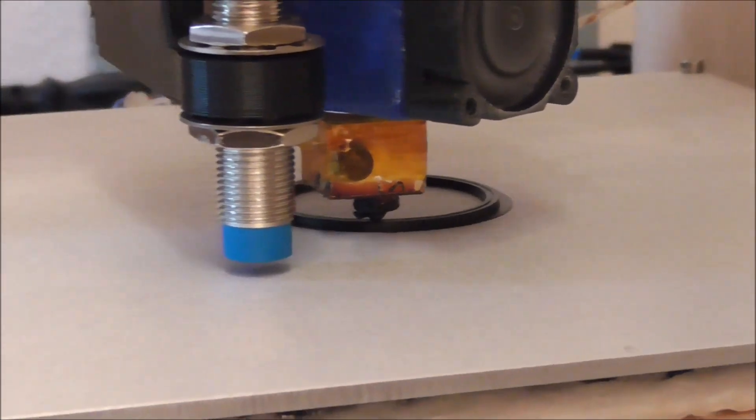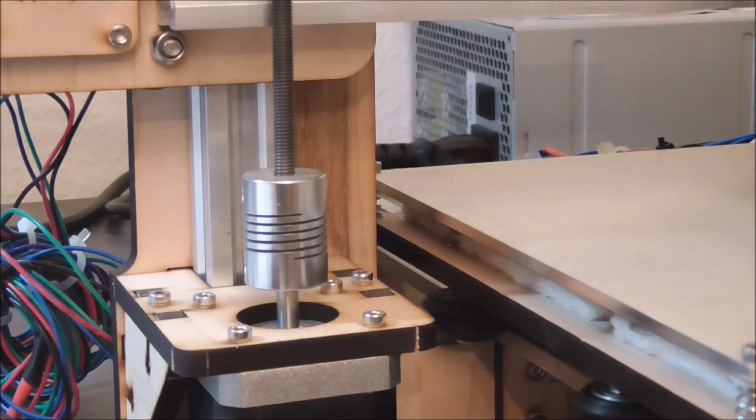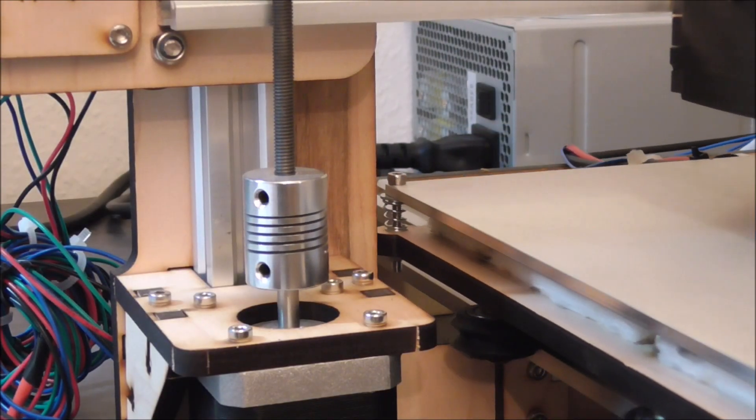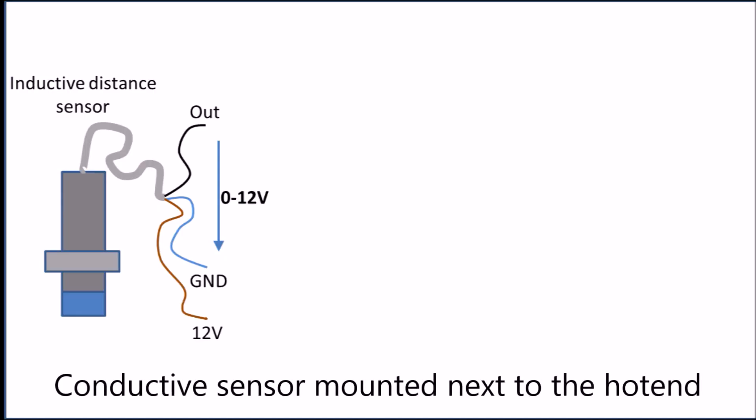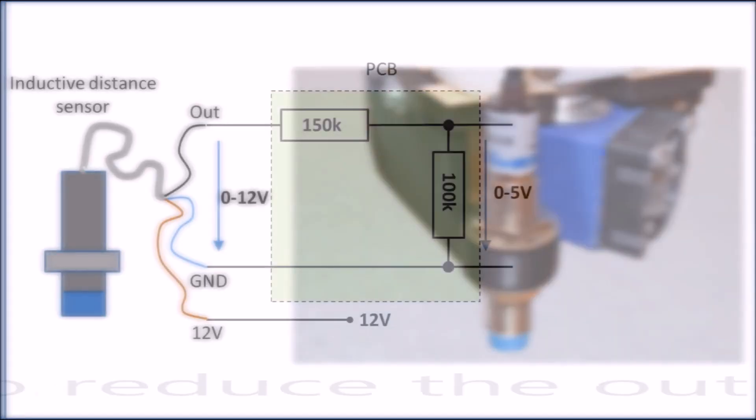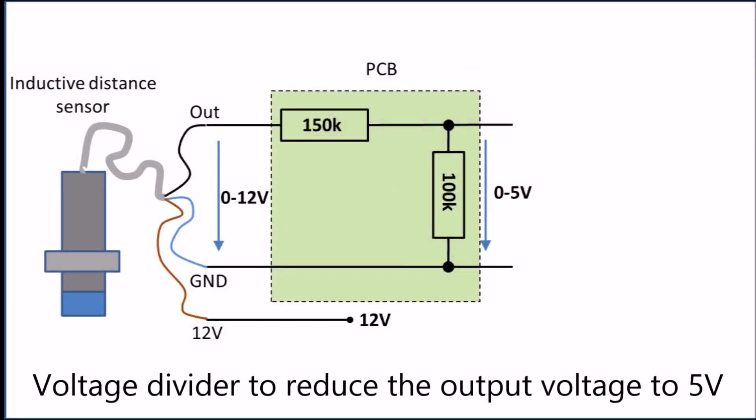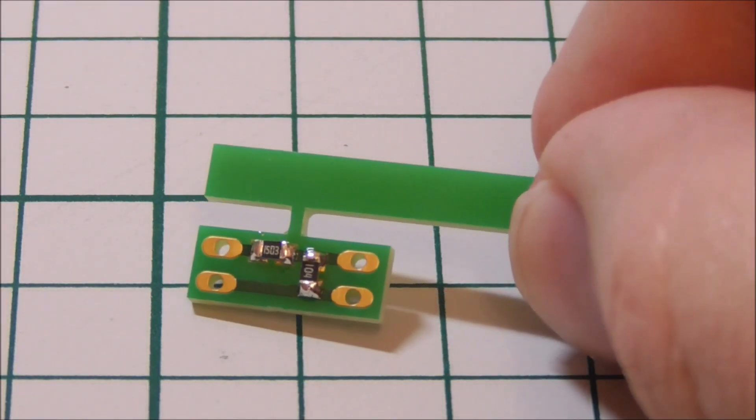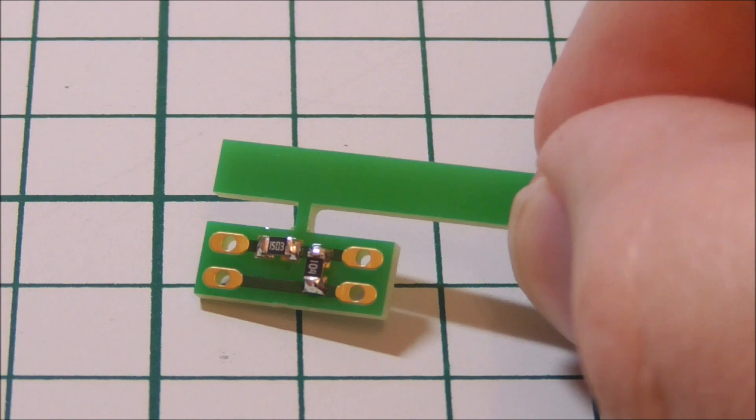All you need to have is a conductive sensor like this one mounted about 1mm above the tip of your hot end. Additionally, you will need a little PCB to reduce the output voltage from 12V from the sensor to 5V as an input for the printer board. You can easily set up a simple voltage divider for that. This little PCB here can be insulated by a heat shrink tube.